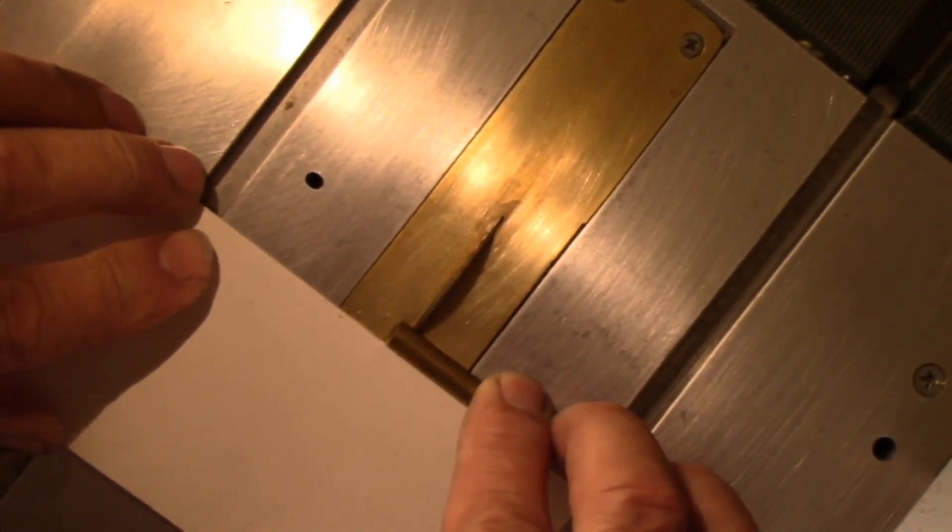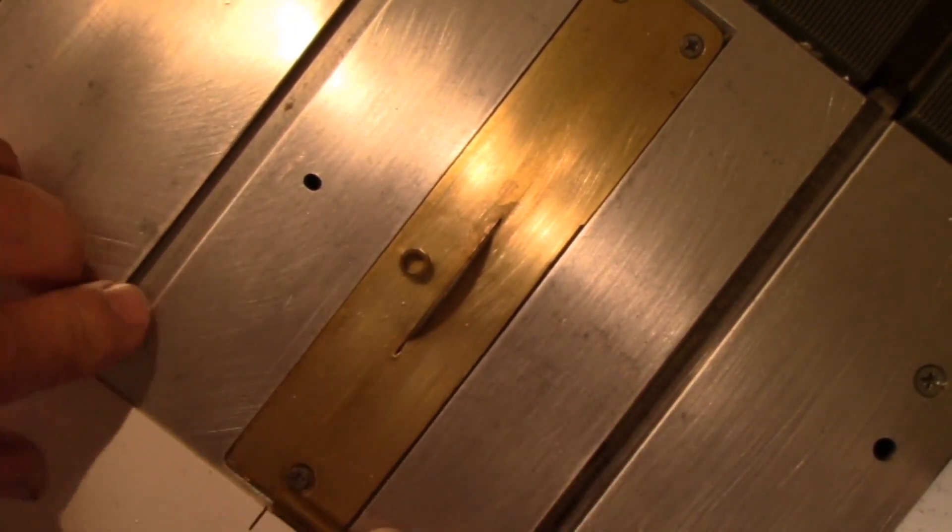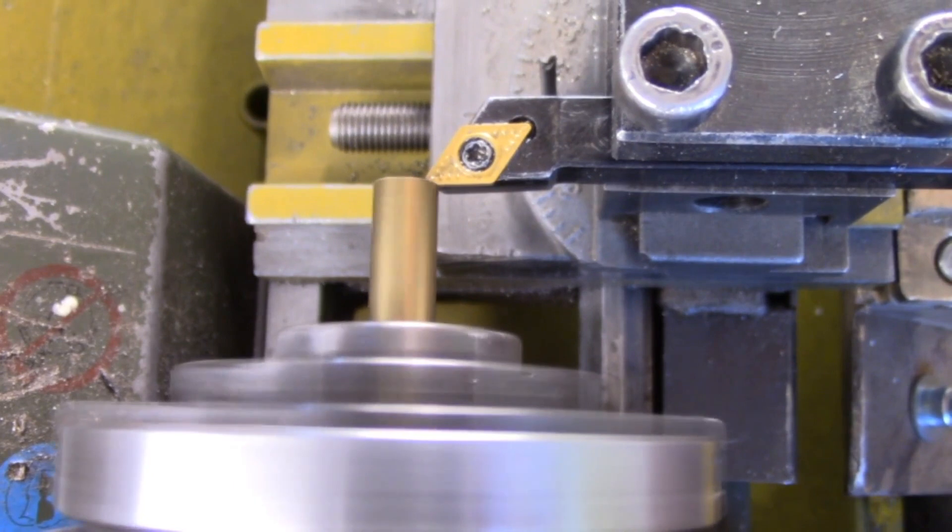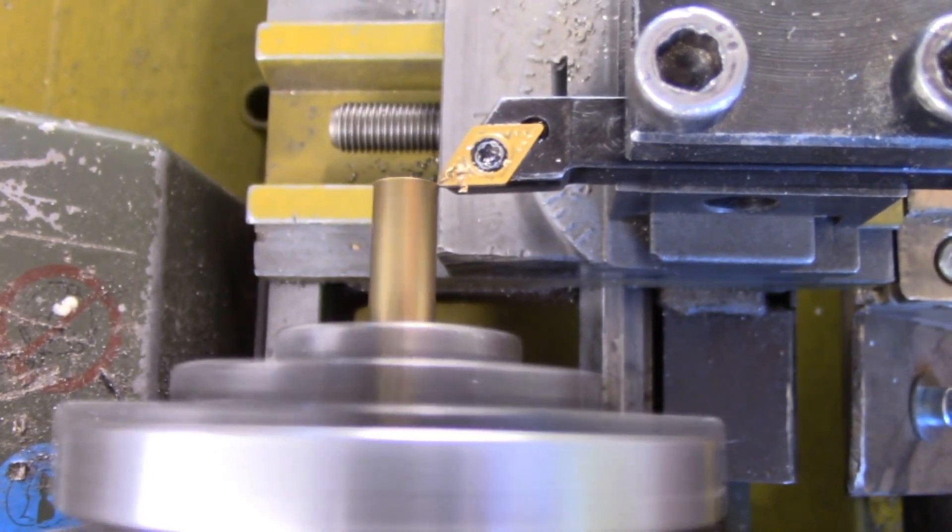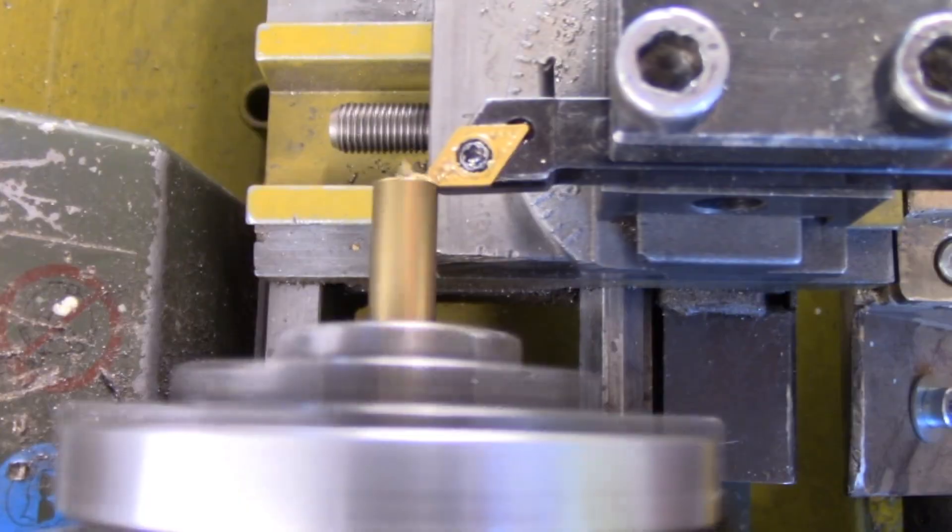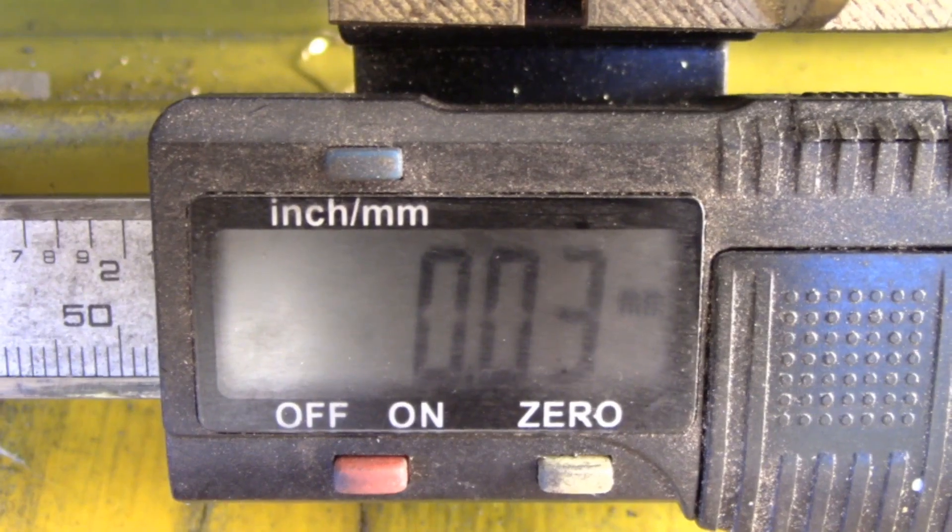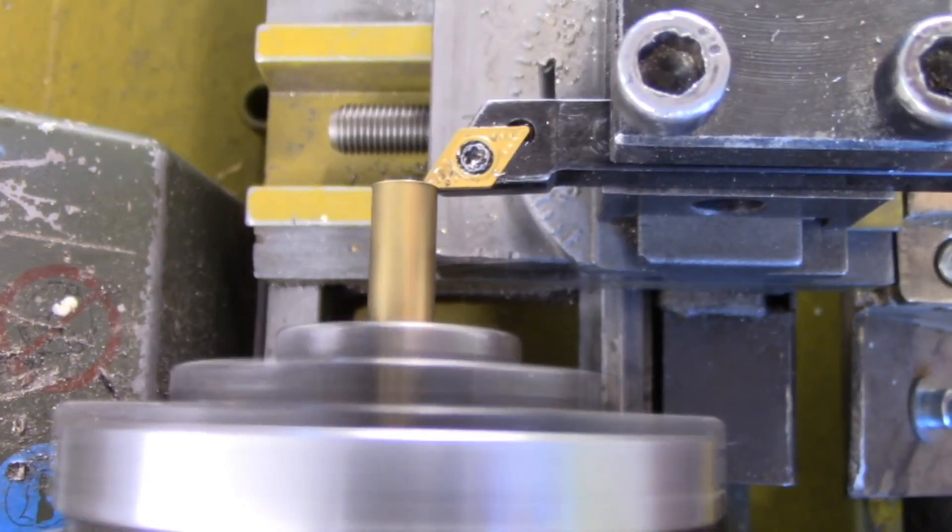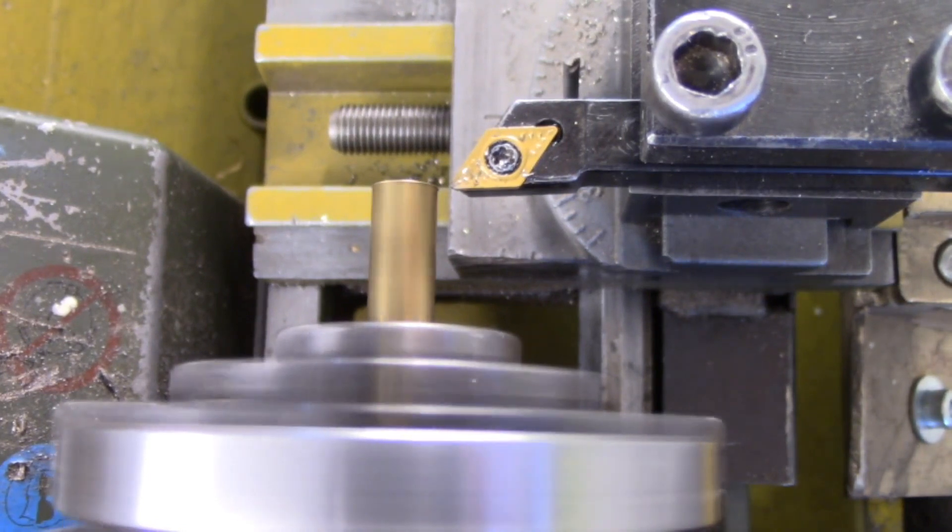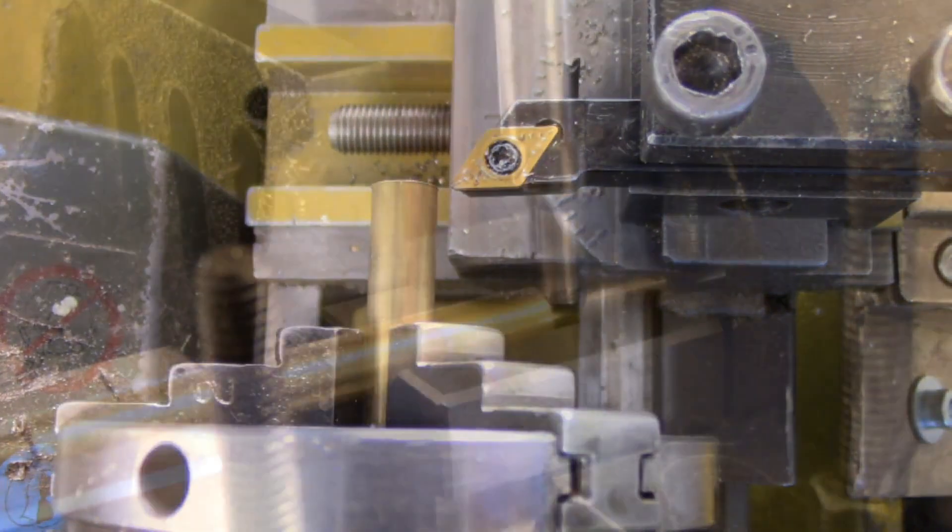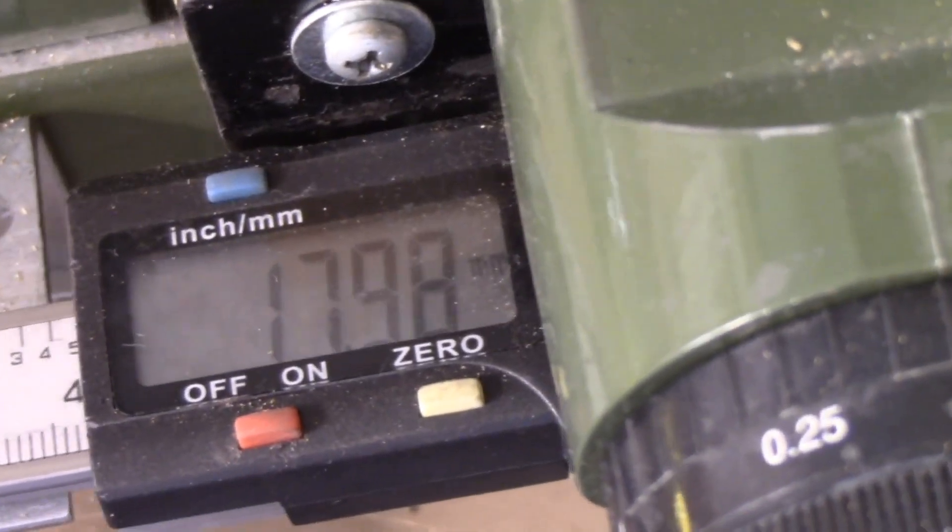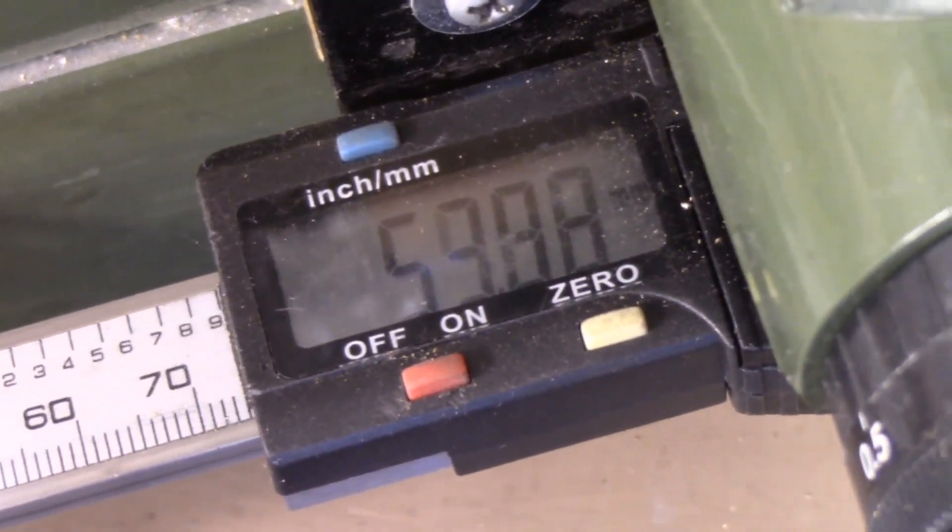The tubes are cut to size and brought to the exact dimensions with the lathe. In the middle we create a two millimeter hole for a transverse split pin which positions the tube on the axis.